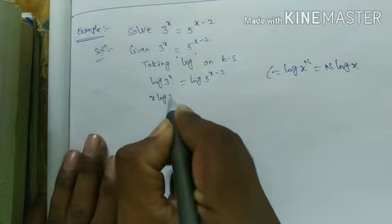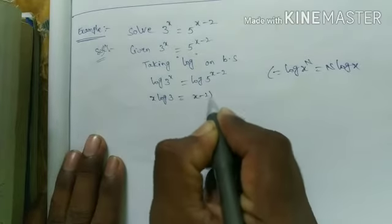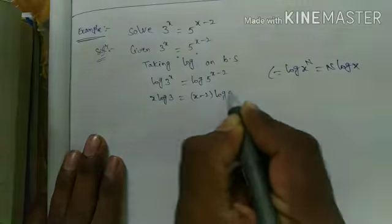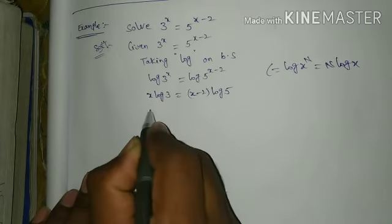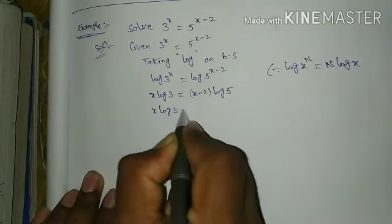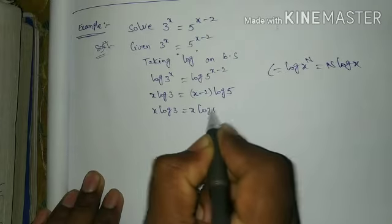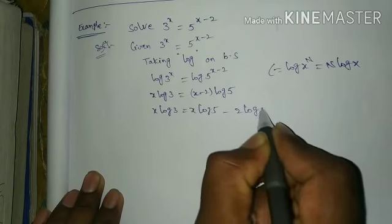Here log 3 equal to x minus 2 into log 5. x log 3 equal to x log 5 minus 2 log 5.